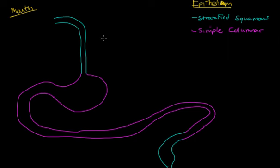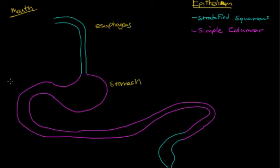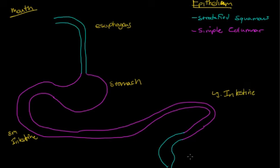So you can see the different types of epithelium. We'll go through and label where everything is now: mouth, esophagus, stomach, small intestine, large intestine, and anus.